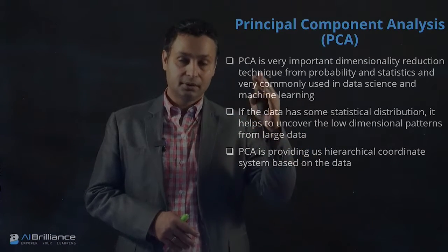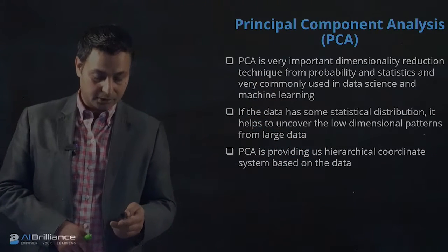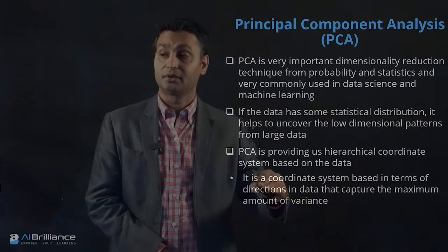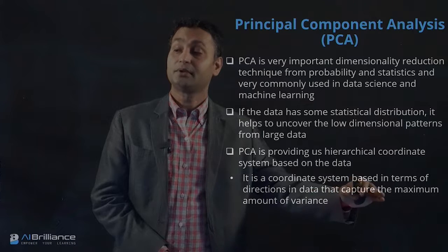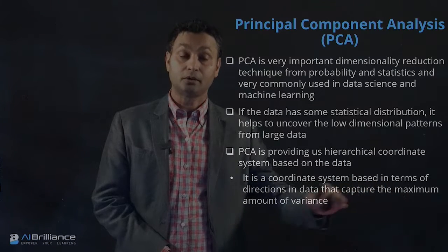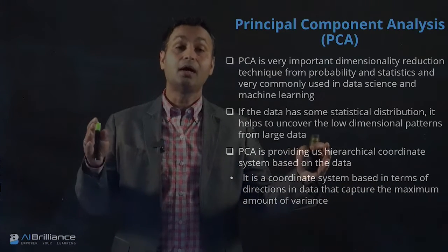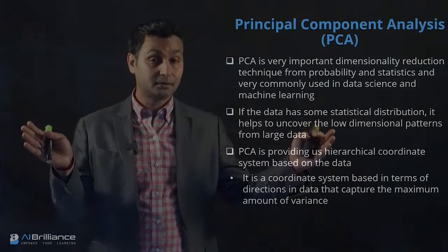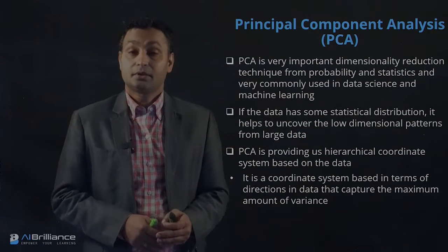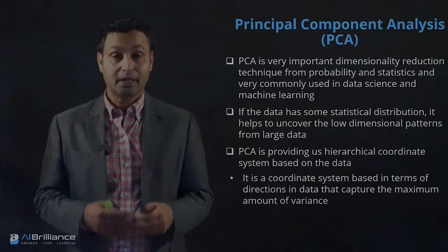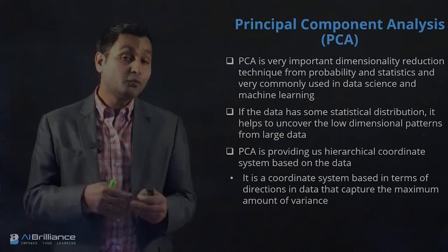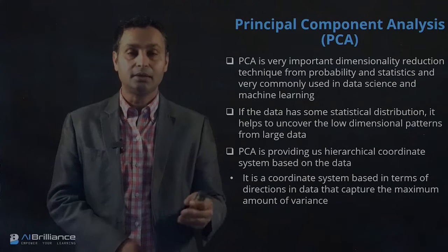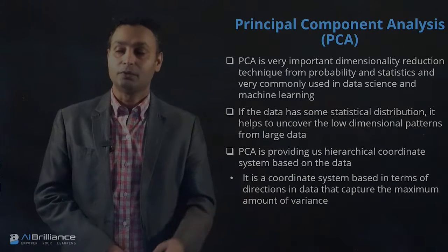PCA encapsulates this hierarchical coordinate system where the important axes are represented first, then the less important ones. It's essentially a coordinate system based on the direction in which the data captures the maximum amount of variance. The U axis in the previous example captures the maximum variance in the data, and we can use that information to reduce dimensionality in the overall data.